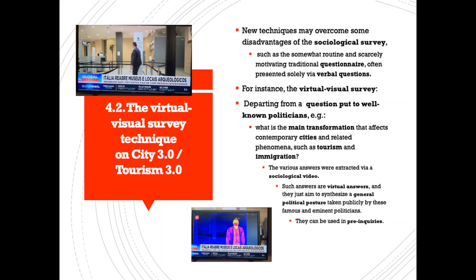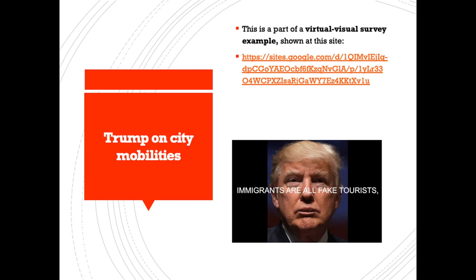Four point two: the virtual visual survey technique on City 3.0 and Tourism 3.0. New techniques may overcome some disadvantages of the sociological survey, such as the somewhat routine and scarcely motivating traditional questionnaire often presented solely via verbal questions. For instance, the virtual visual survey departs from a question put to well-known politicians — for example, what is the main transformation that affects contemporary cities and related phenomena such as tourism and immigration — and the various answers were extracted via a sociological video. Such answers are virtual answers and aim to synthesize a general political posture taken publicly by famous politicians. They can be used in pre-enquiries. This is part of a virtual visual survey example shown at this site.